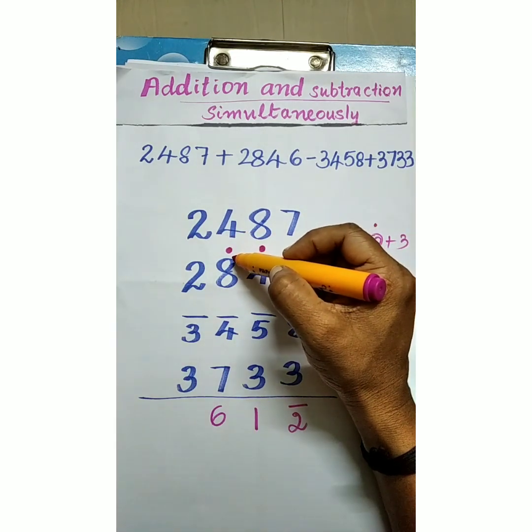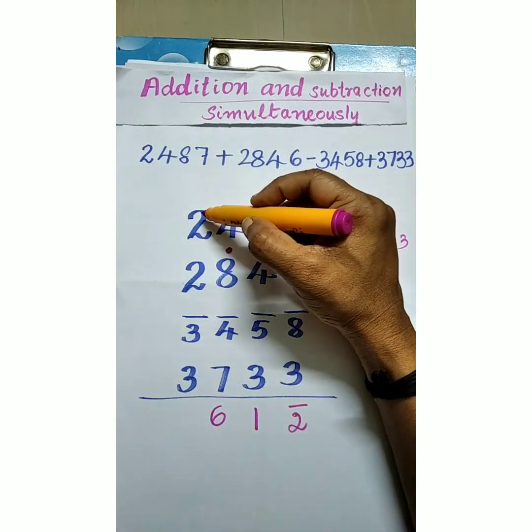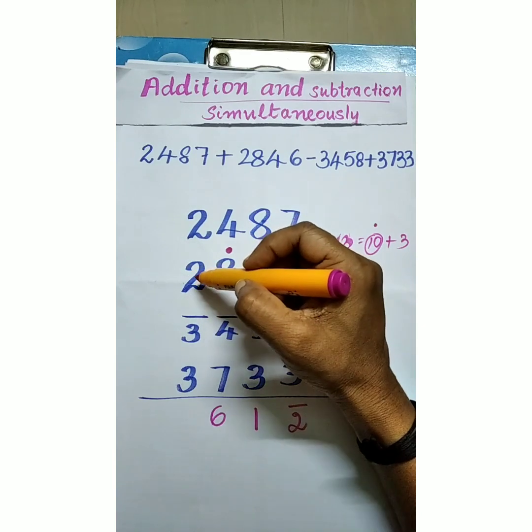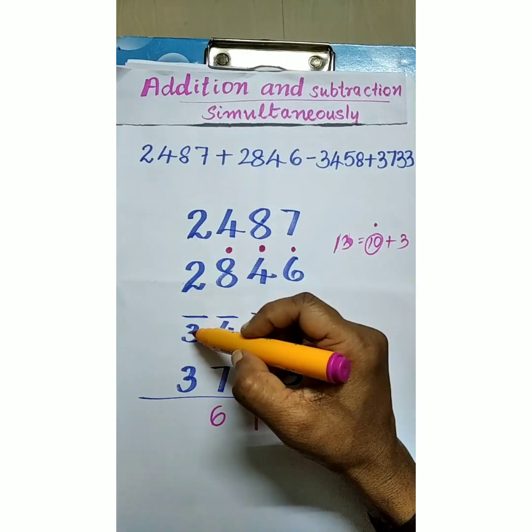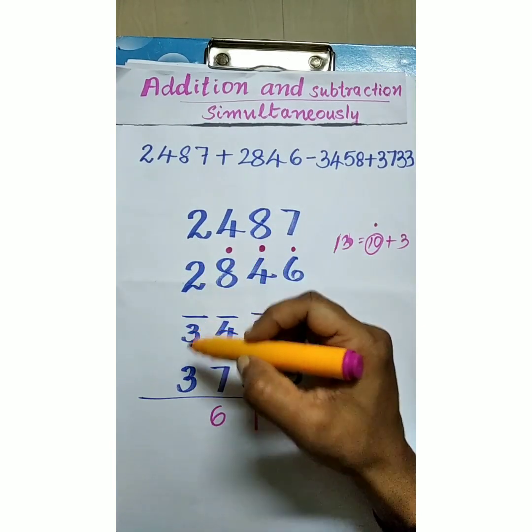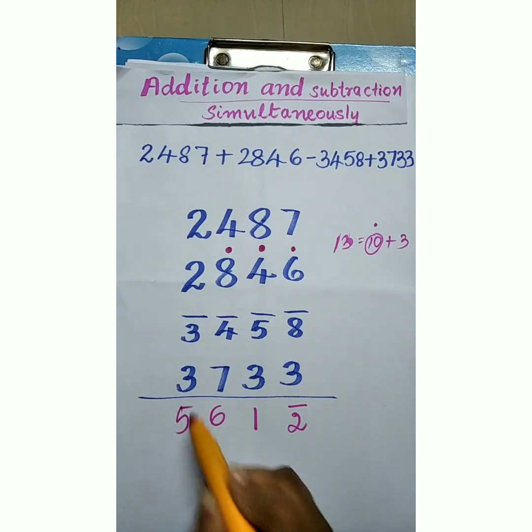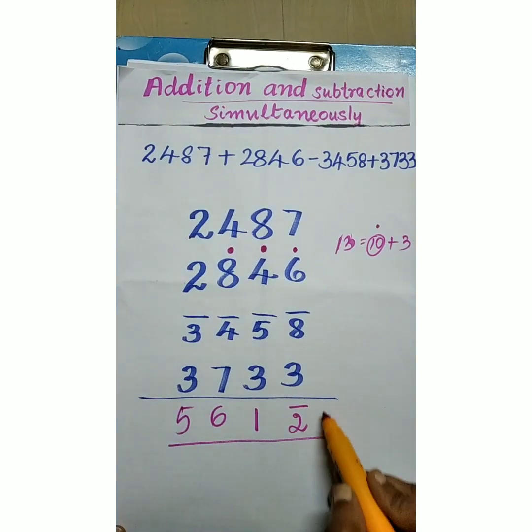Now positive shoot. Carry forward to next place. 2 plus 1 is 3. 3 plus 2 is 5. 5 minus 3 is 2. 2 plus 3 is 5. Now the result is 5 6 1 2.